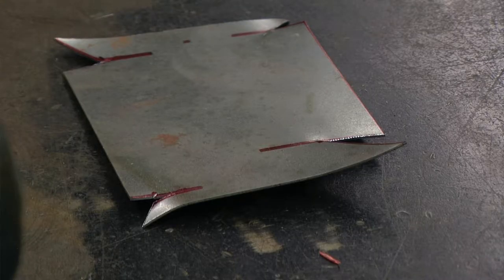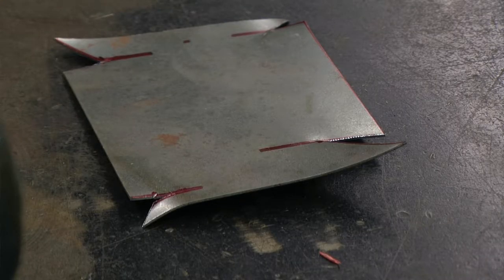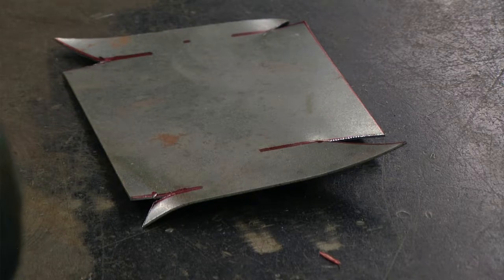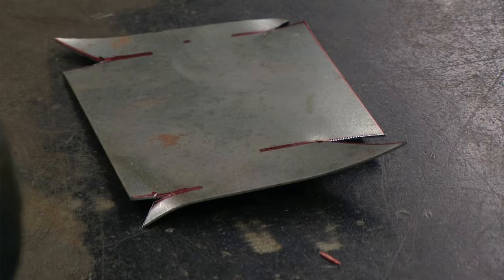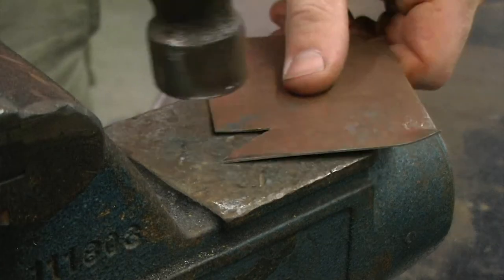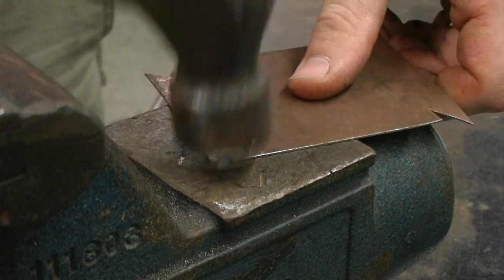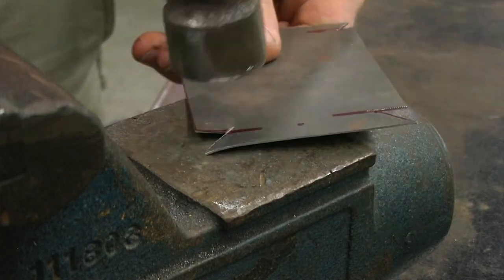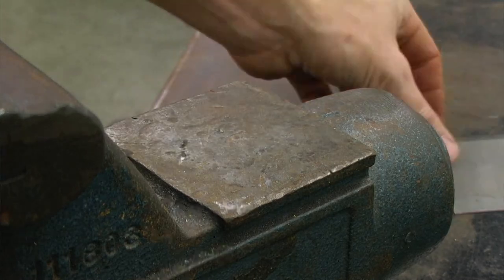At this point we have cut out the corners using our aviation snips and we are left with a little bit of deformation of the metal. With safety glasses on I am going to use a ball peen hammer to gently conform that material back to a flat position.